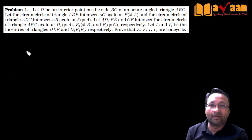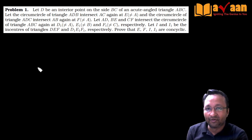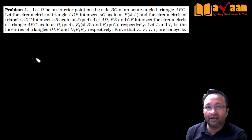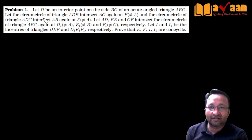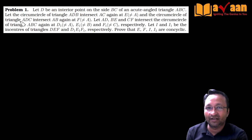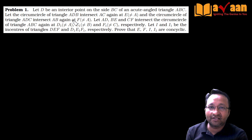Let's look at this problem from IOQM this year — a very good geometry problem. The first challenge is to read the problem carefully: let D be an interior point on side BC of an acute triangle ABC. The circumcircle of triangle ADB intersects AC again at E, and the circumcircle of triangle ADC intersects AB again at F.